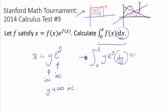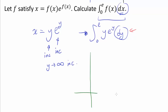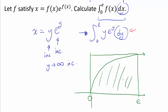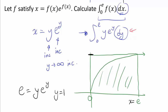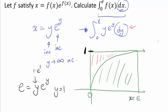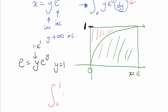So let's make a bigger diagram. Our function is increasing, so let's draw it like this, and we want to find the area from 0 to e. Do we know what y-value corresponds to x equals e? When x equals e, we have e equals y·e^y, and it's obvious that when y equals 1 we get 1 times e to the 1, which is e. So y equals 1 there. The red area is just the integral from 0 to 1 of y·e^y dy, and the entire rectangle has area e times 1, which is e. So our answer is e minus that red area.